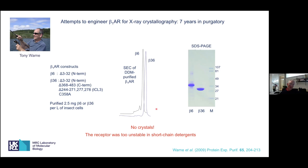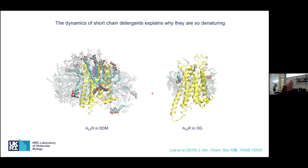The receptor was basically too unstable in short-chain detergents. If you take it from DDM and do the same prep in something like decyl maltoside, it will just crash out overnight in the fridge at 4°C — that unstable. So this was a real problem, and subsequently we've done work looking at why these GPCRs are unstable in short-chain detergents.